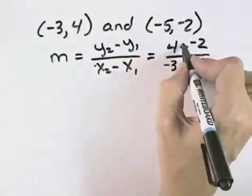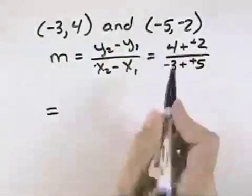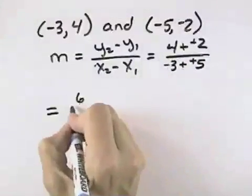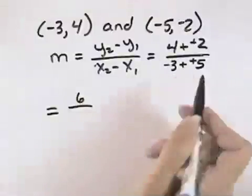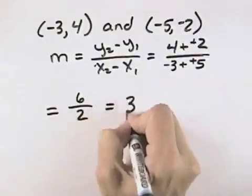Remembering that subtraction is plus the opposite, I can change each of those to plus a positive. So that my slope is 4 plus 2 is 6 in the numerator, negative 3 plus 5 is 2 in the denominator, and this simplifies to 3.